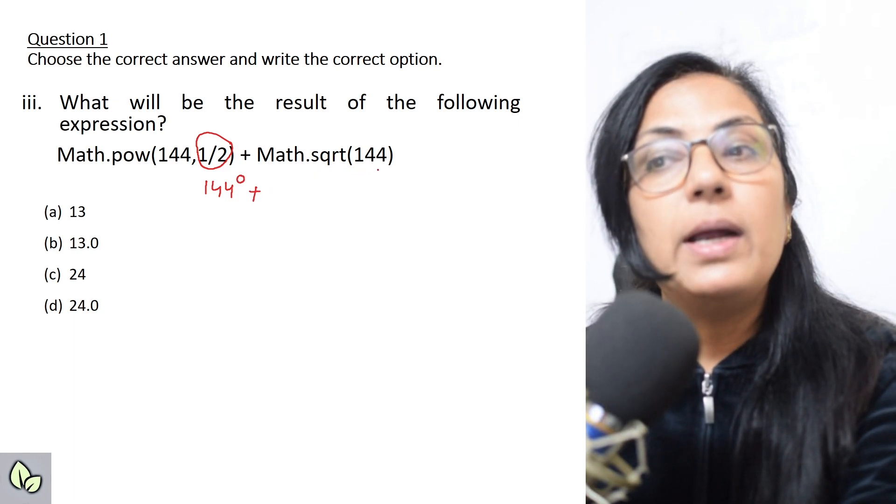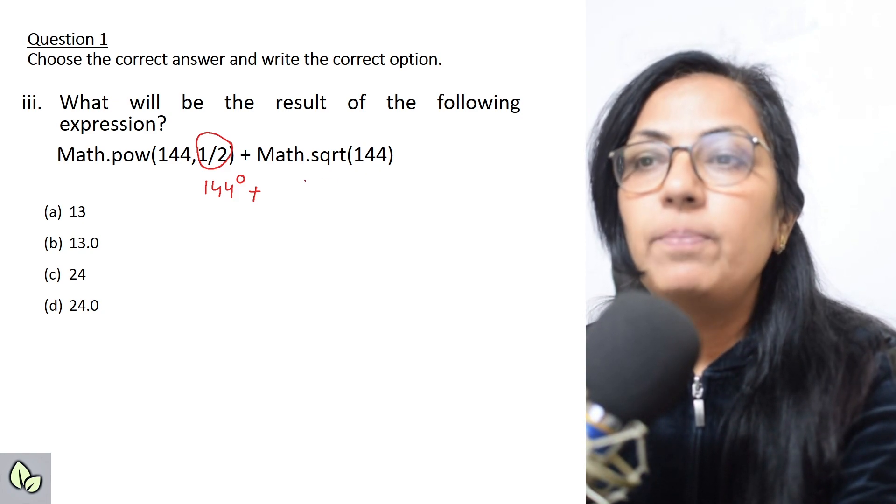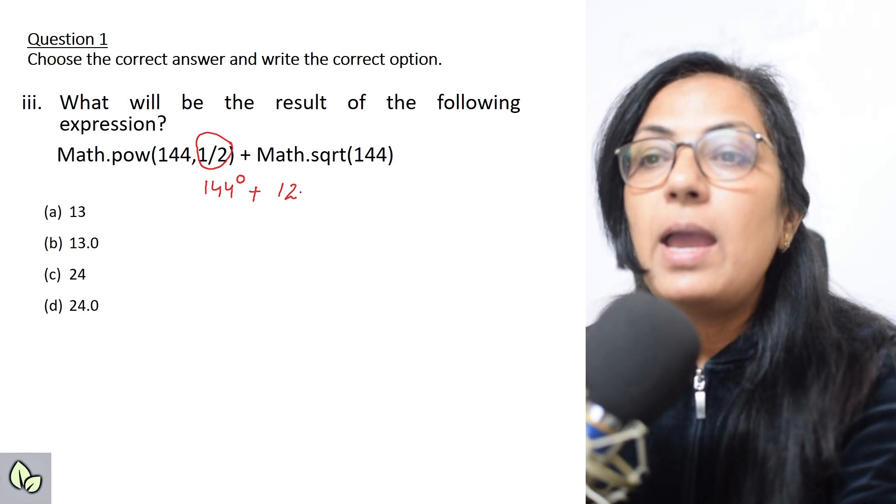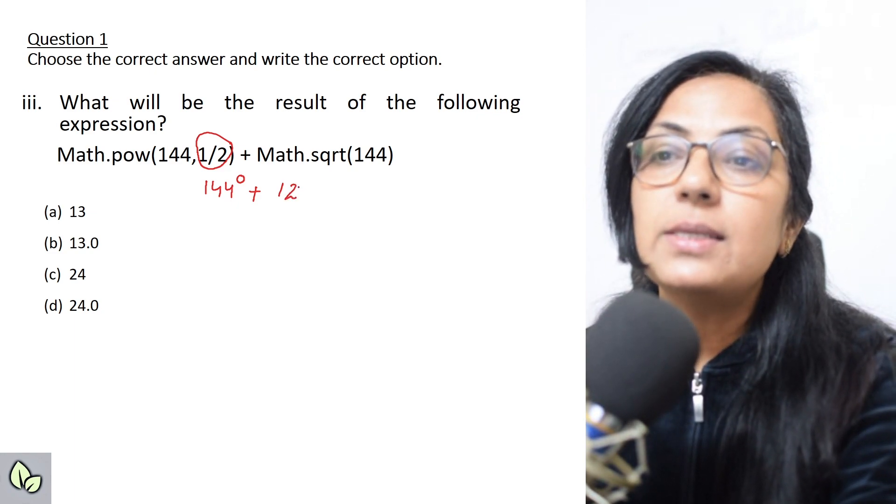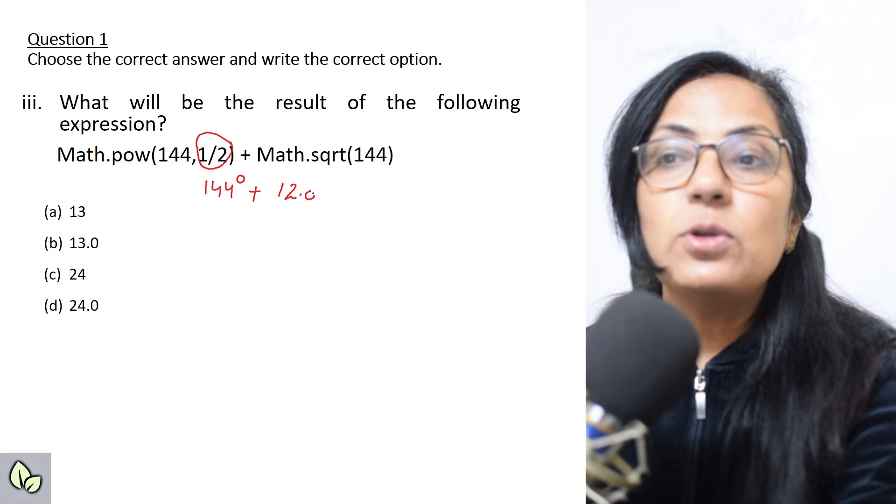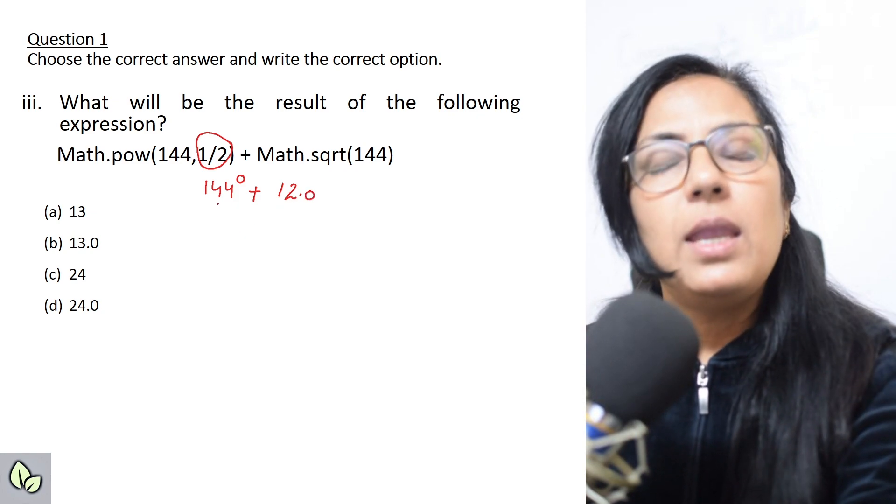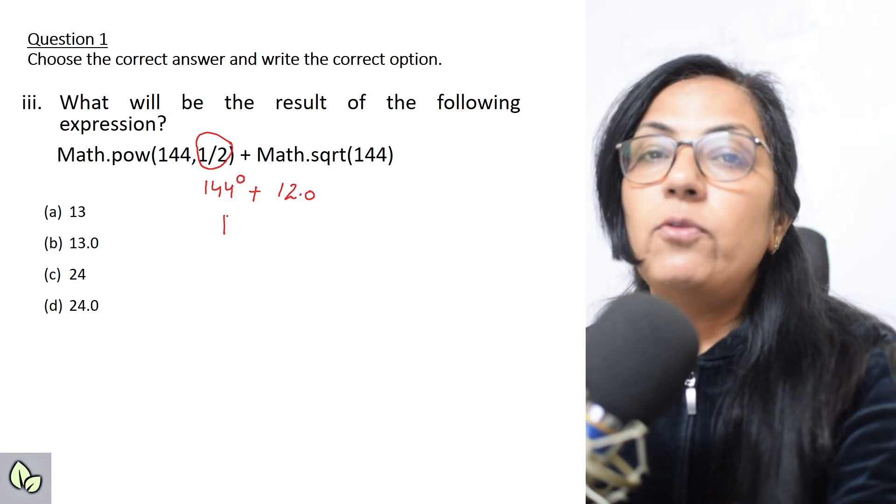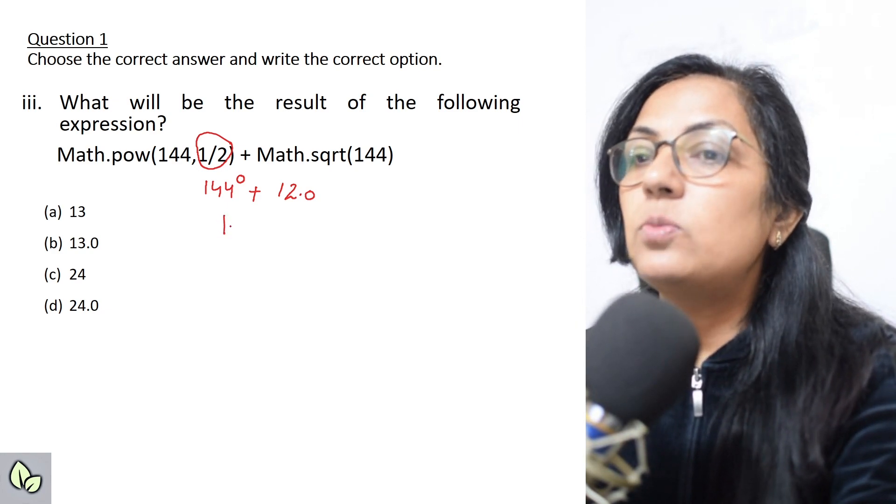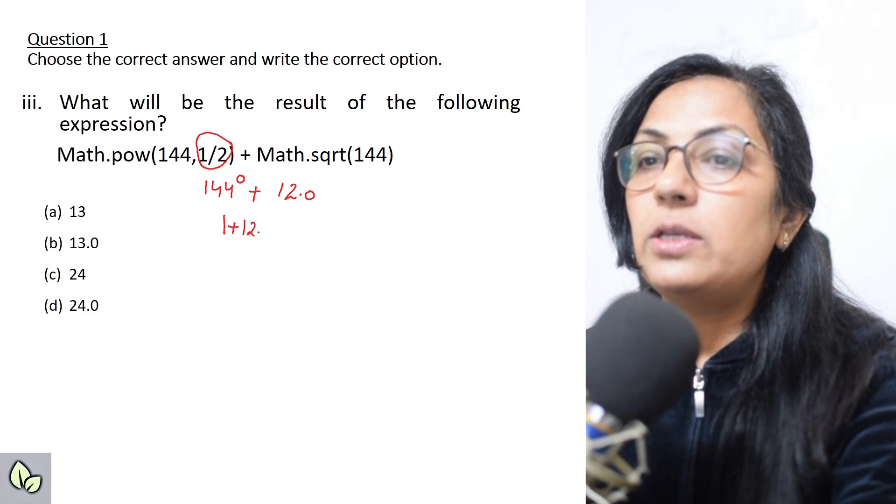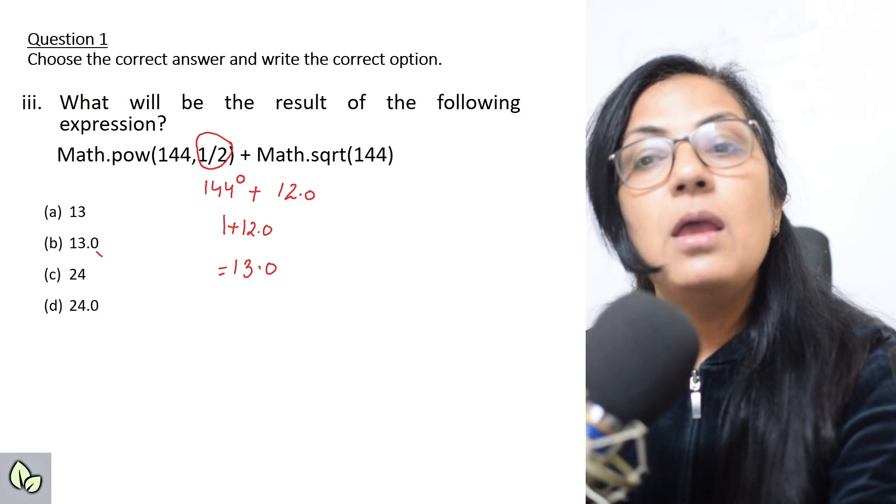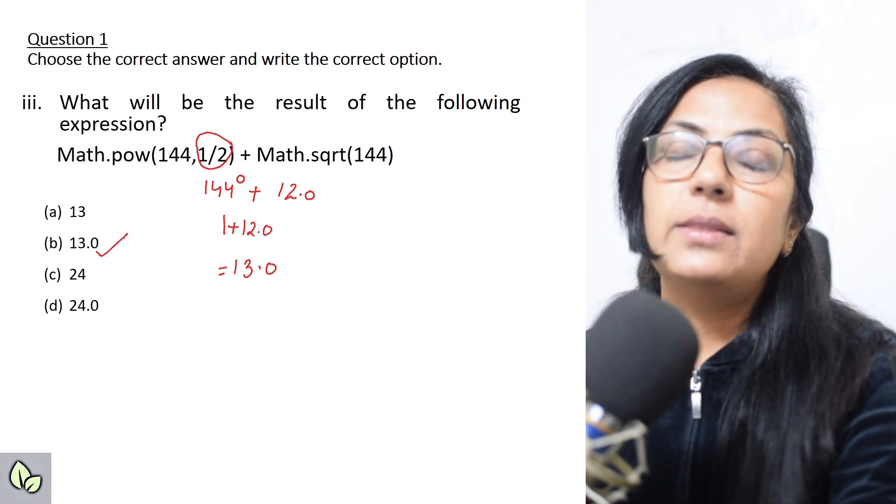Any number to the power 0 is always 1. So 144 to the power 0 is 1 plus 12.0, so the answer will be 13.0. Children, please solve the questions like this and then only select the options.